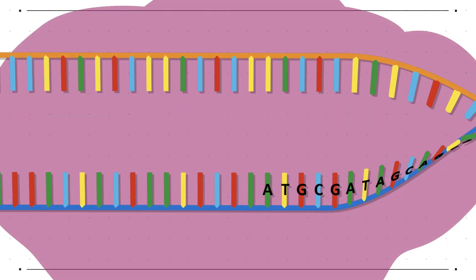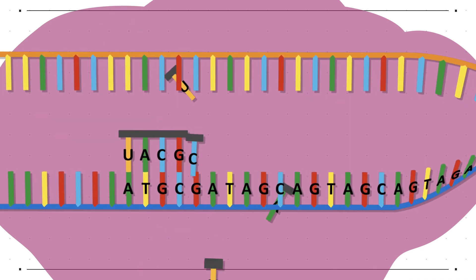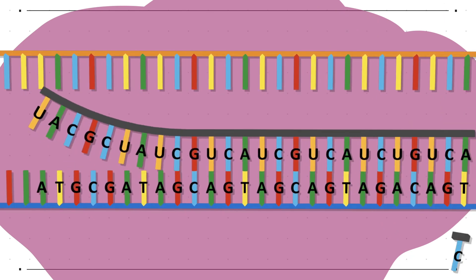During transcription the DNA unwinds and the polymerase moves along the gene reading each base at a time to produce a strand of messenger RNA complementary to the DNA sequence.